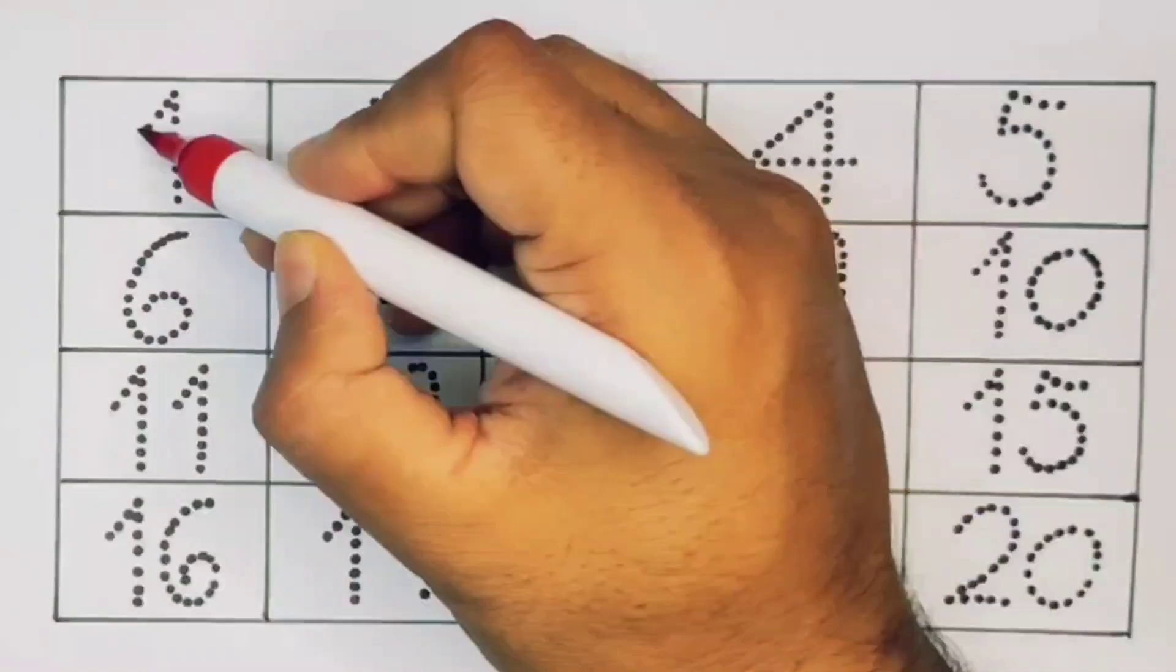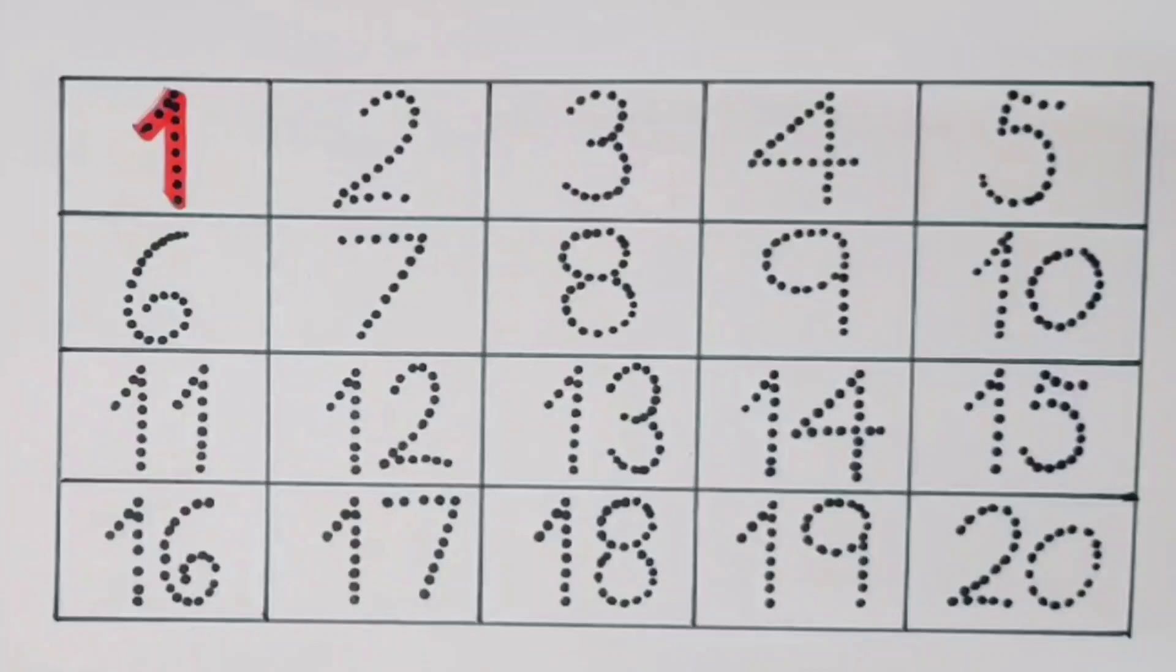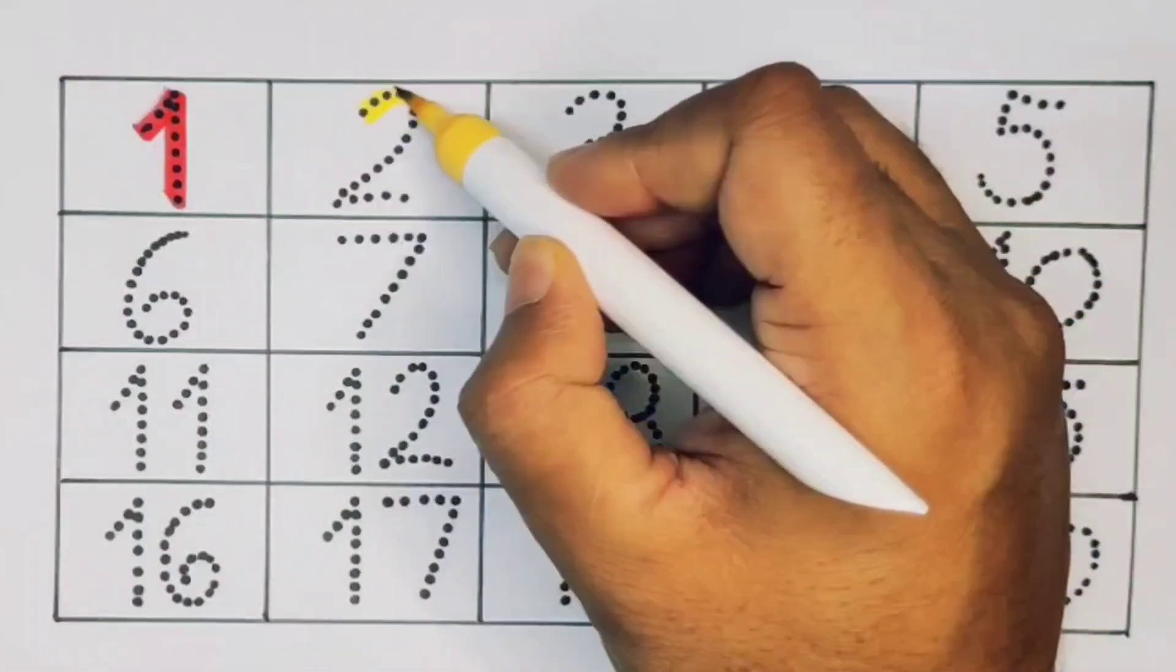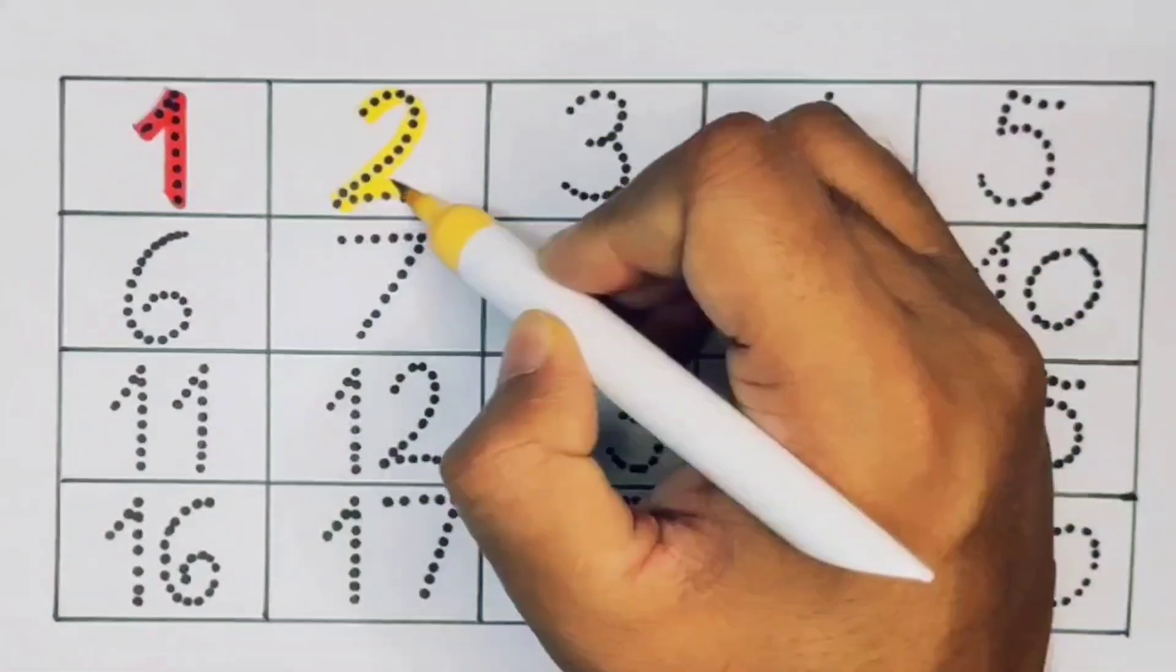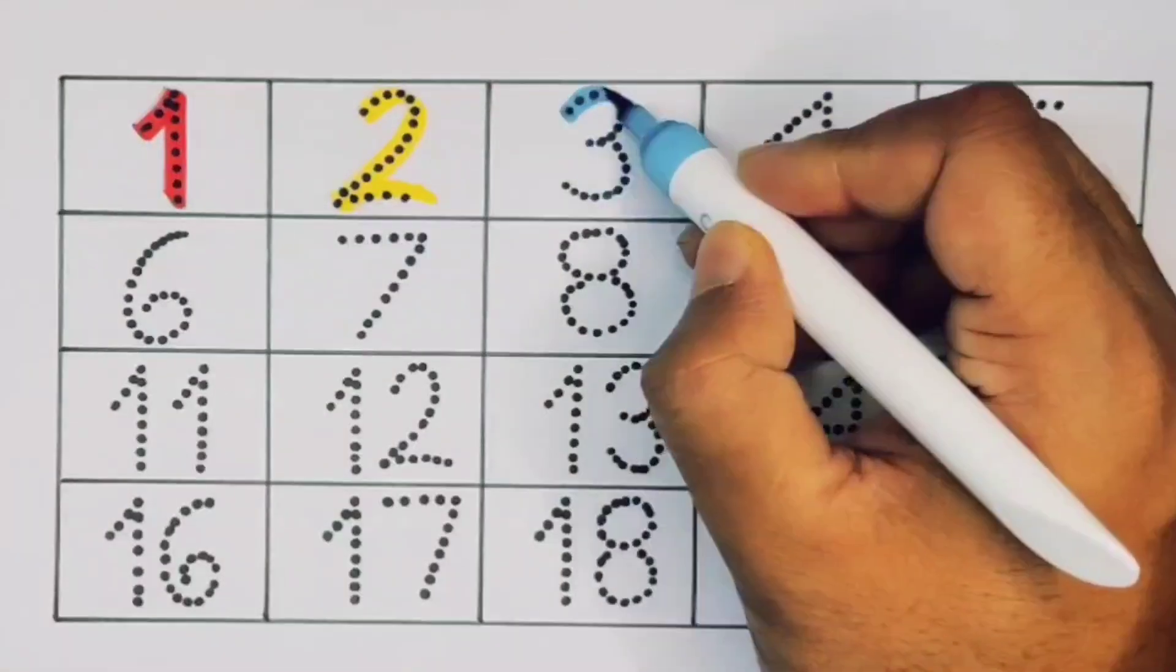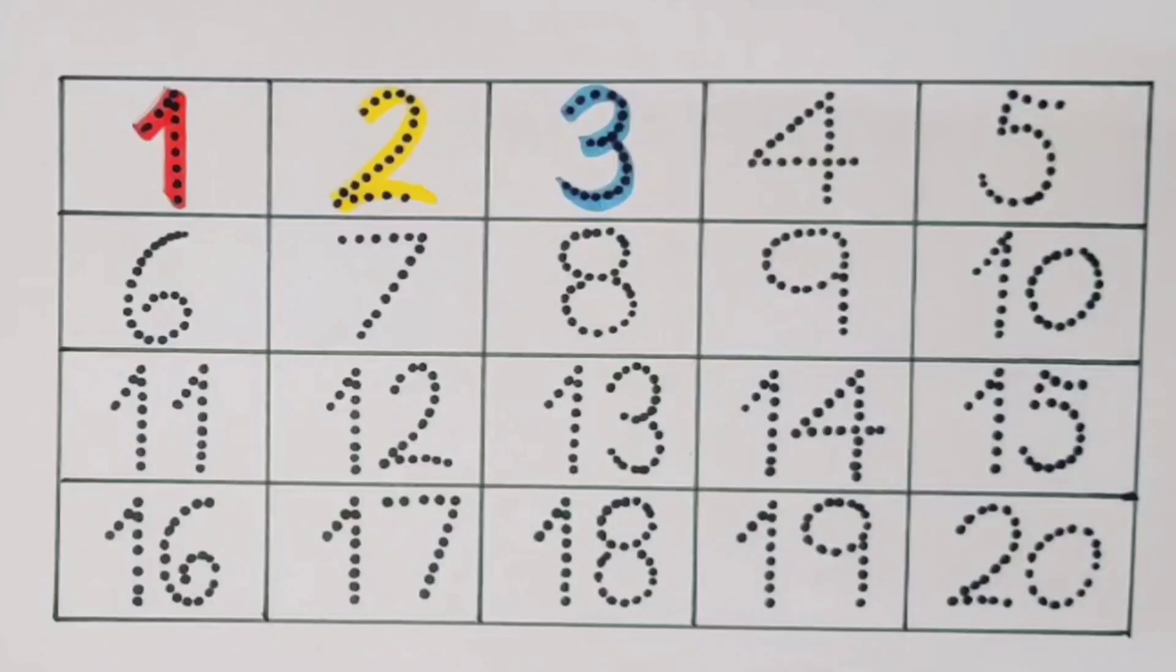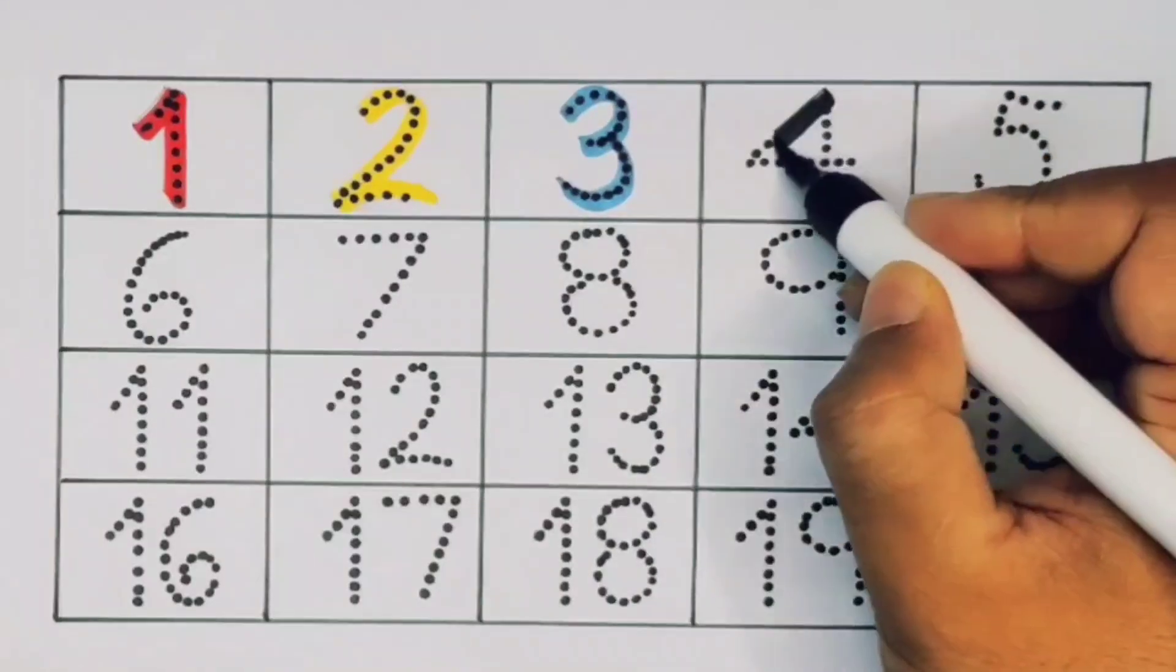First, one. Number one. Next kids, two. Number two. Next, three. Number three. Next kids, four. Number four.